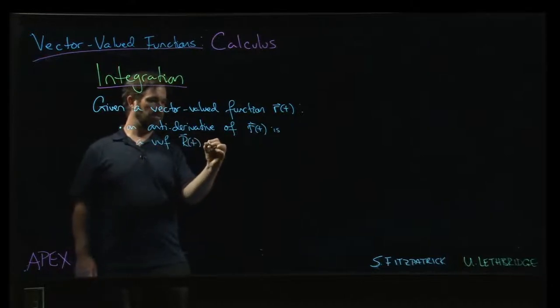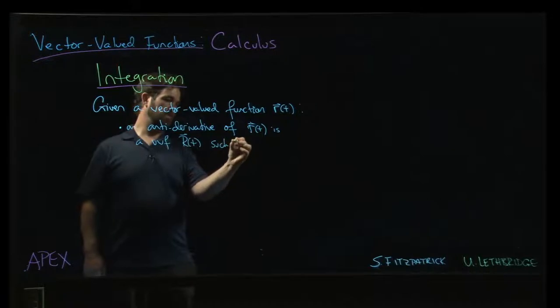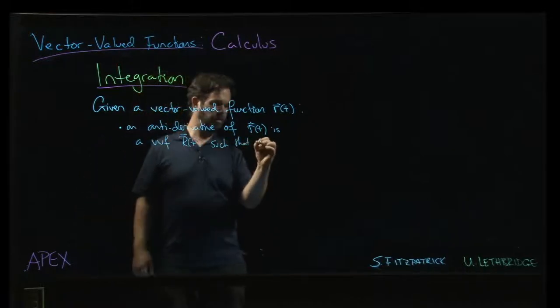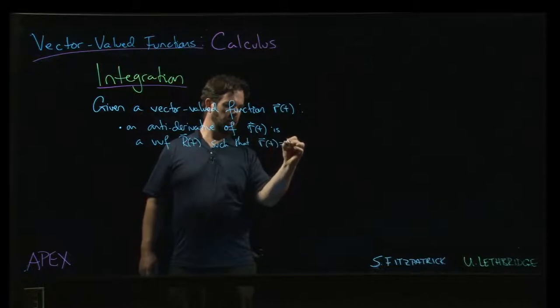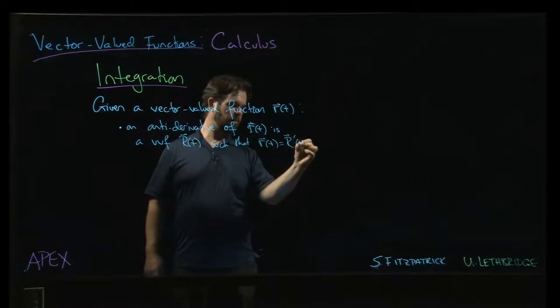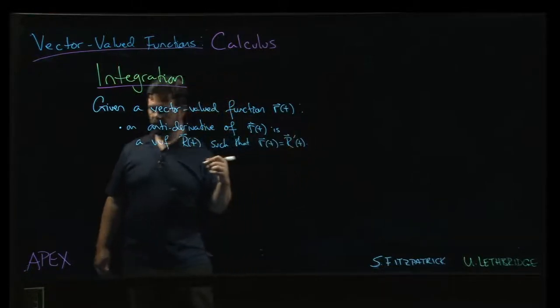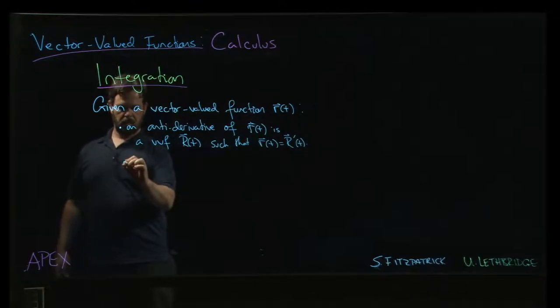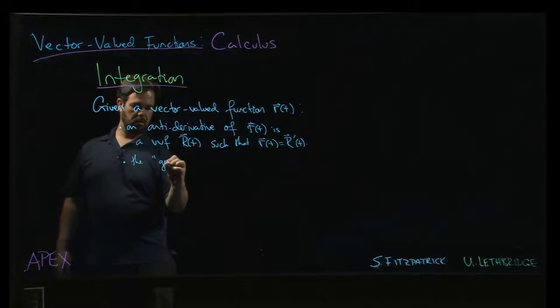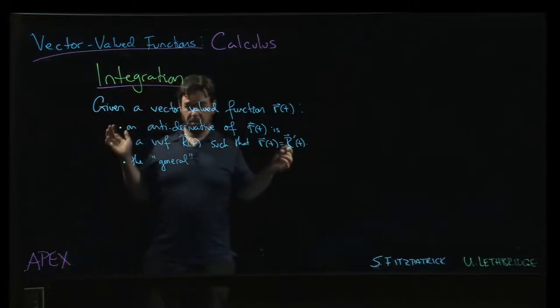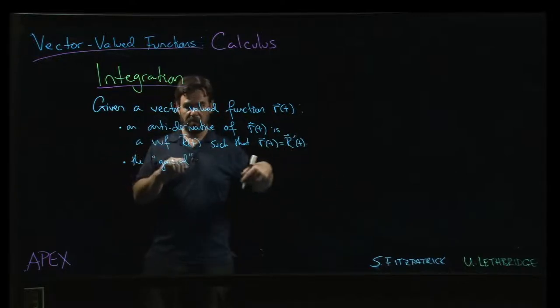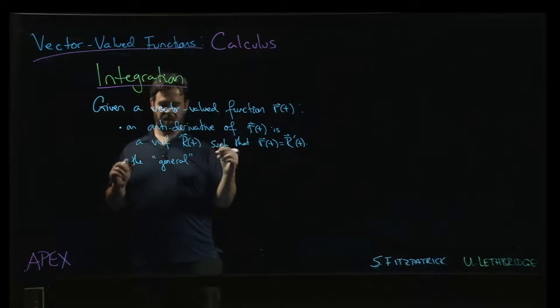Let's say r of t such that r is equal to r prime, as usual. All right, the so-called general antiderivative, or some people like to think of the set of all antiderivatives, or just the one with the arbitrary constant of integration.